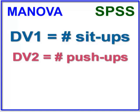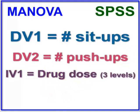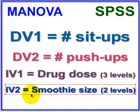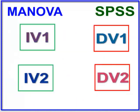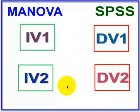We're going to use the data from one of our previous studies, the RAT study. There are two DVs and two IVs. IV number one is drug dose with three levels: zero milligrams, 10 milligrams, 20 milligrams. IV number two is smoothie size: small and large. We're going to see if there's a significant difference between push-ups and sit-ups — which both define the fitness of the RAT — and whether drug dosage or smoothie size has any significant difference with the outcome of the DVs.